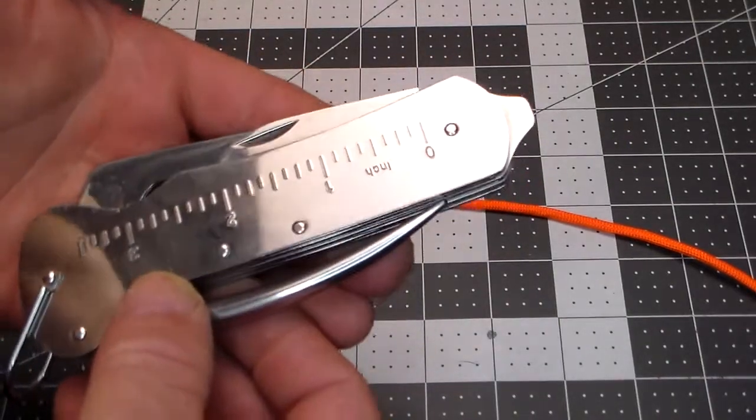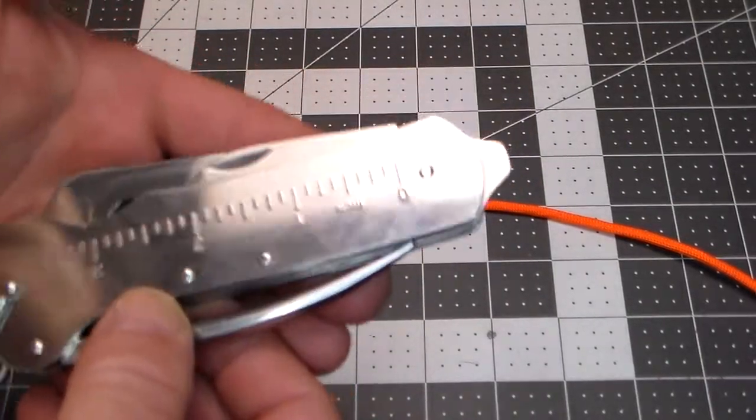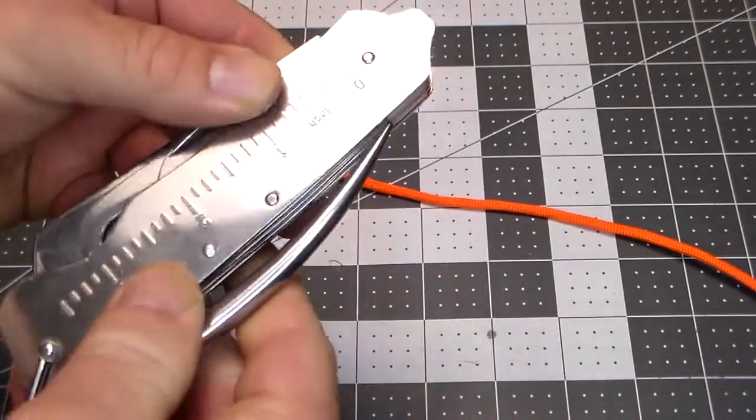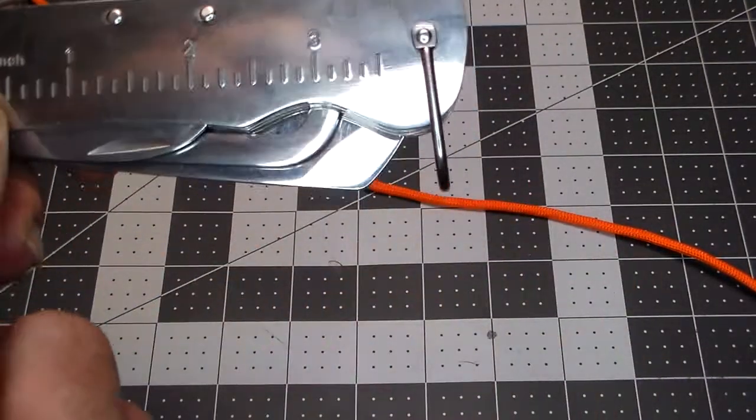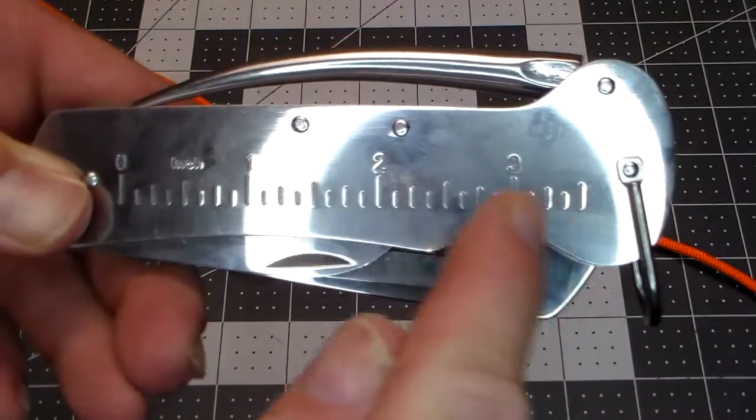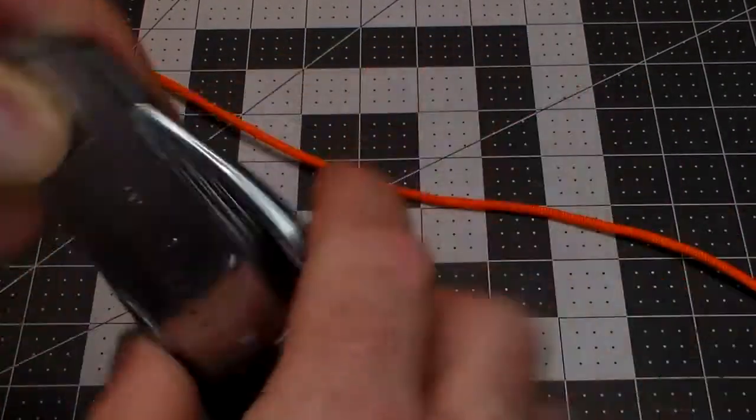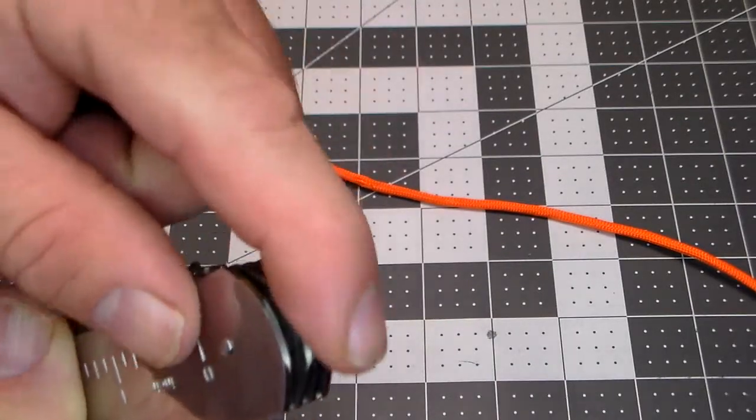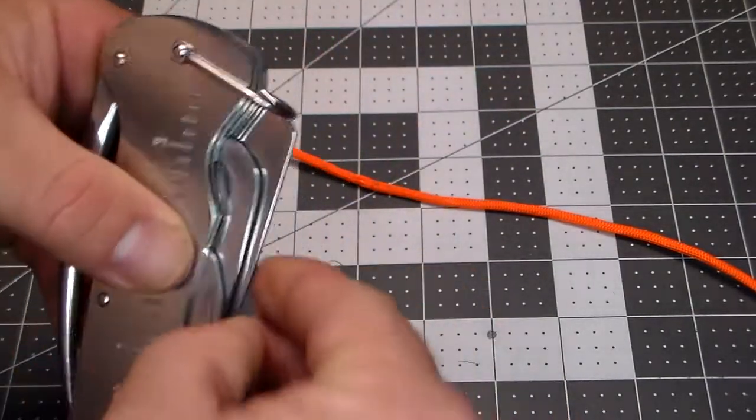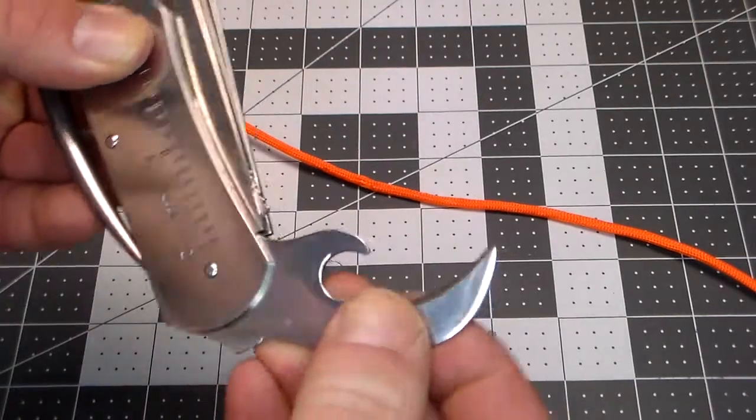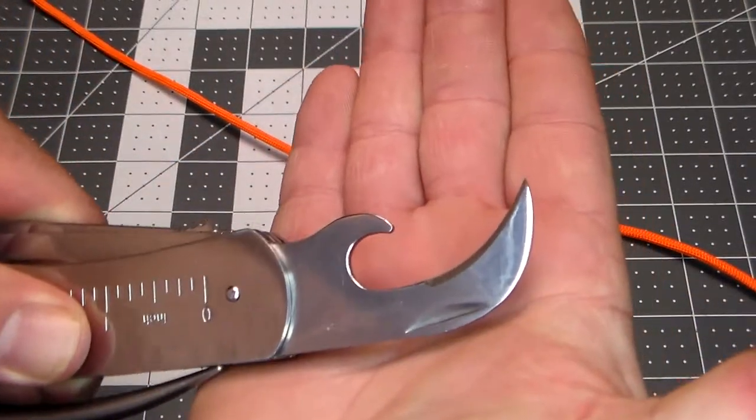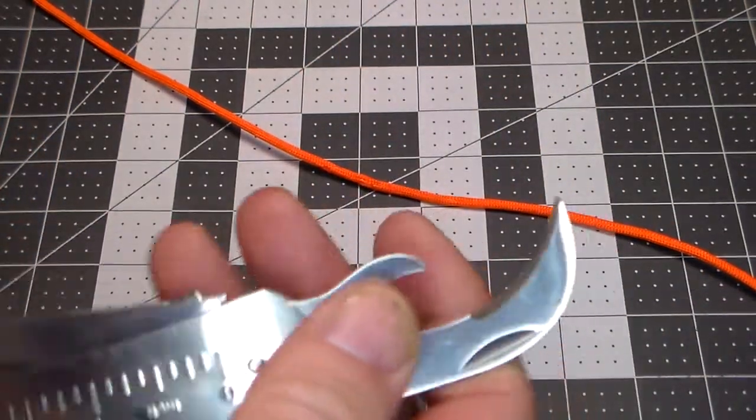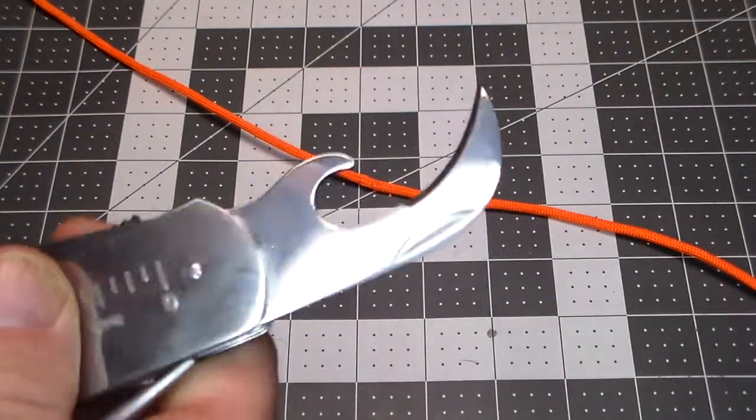When I say it's a multi-tool, it truly is a multi-tool. You have a marlin spike here, we have an inch ruler here, we have a screwdriver tip right there. Okay, then we have a huge can opener. I mean look at the size of that can opener. I guess the cans back in the old days were pretty dang Tyrannosaurus sized.